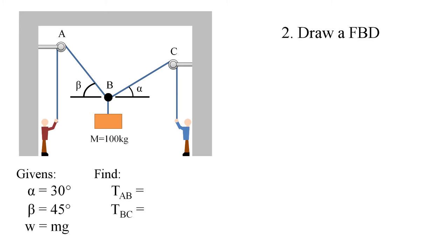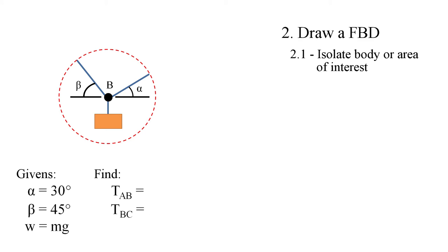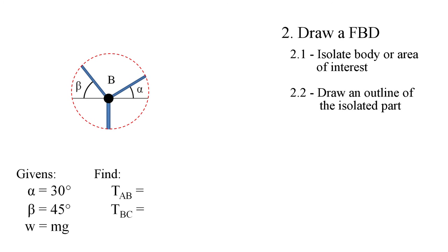In order to draw the free body diagram, isolate the body or area of interest. The crate is in equilibrium and if you look at the crate closely, you will realize there are three cables and all we need to do is draw the free body diagram containing these three cables. And these three cables are intersecting at point B and let's identify this area. Now, draw an outline of the isolated part. This outline has got three lines coming out of point B. Each line represents the ropes.